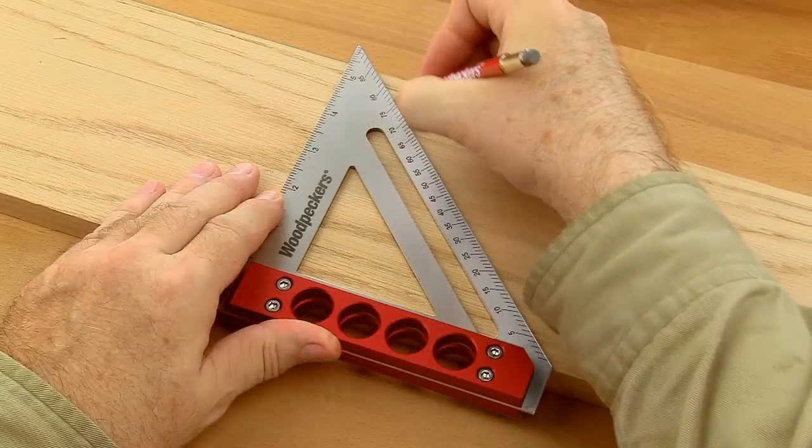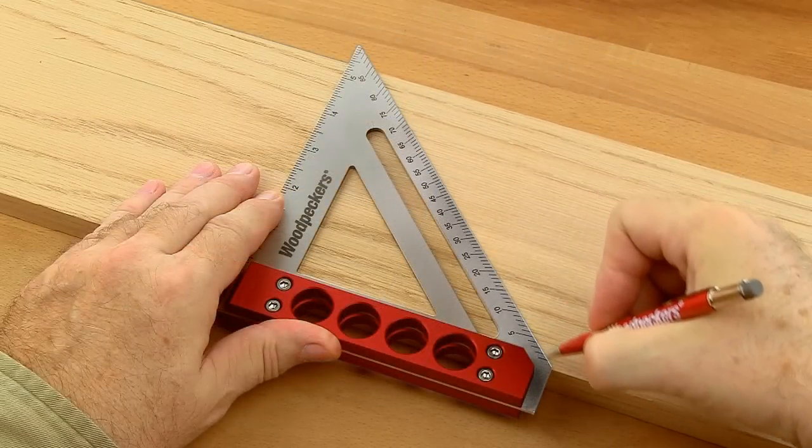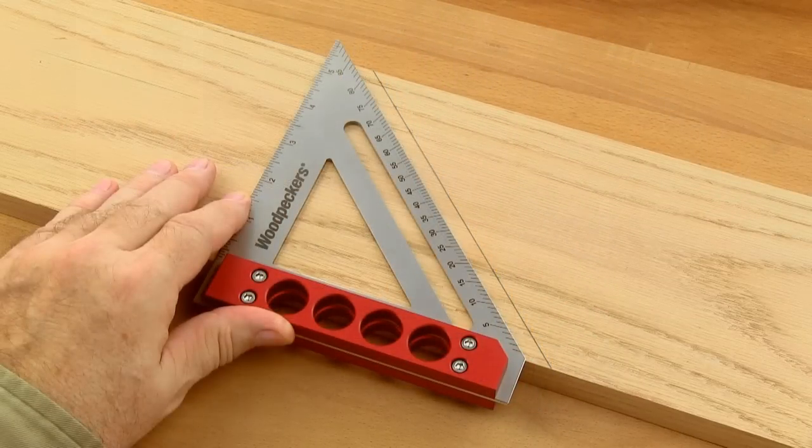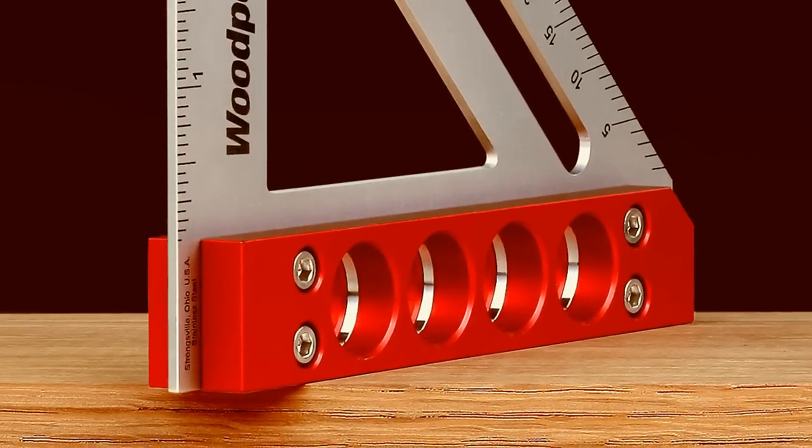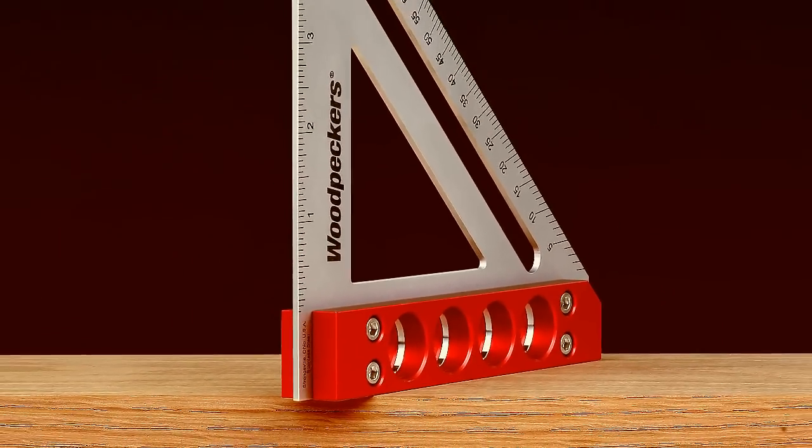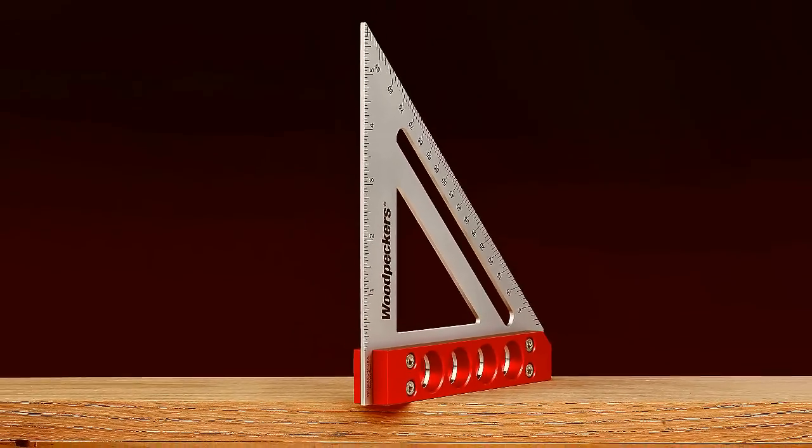The fixed 90 degree and 45 degree angles are accurate to within 1/1000th of an inch or less. The square's stout construction, including a stainless steel blade, means it will last a lifetime and never lose tolerance.